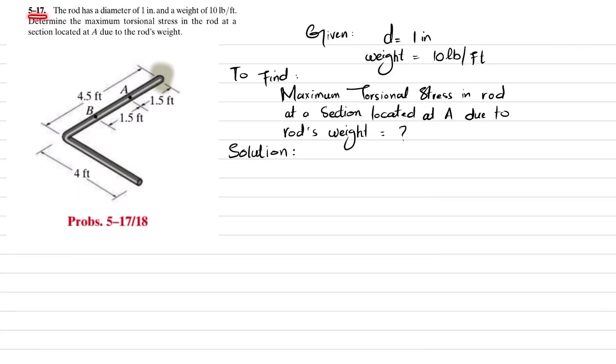Welcome back to Problem 5-17. The statement is: the rod has a diameter of 1 inch and weight of 10 pounds per foot. Determine the maximum torsional stress in the rod at a section located at A due to the rod's weight.